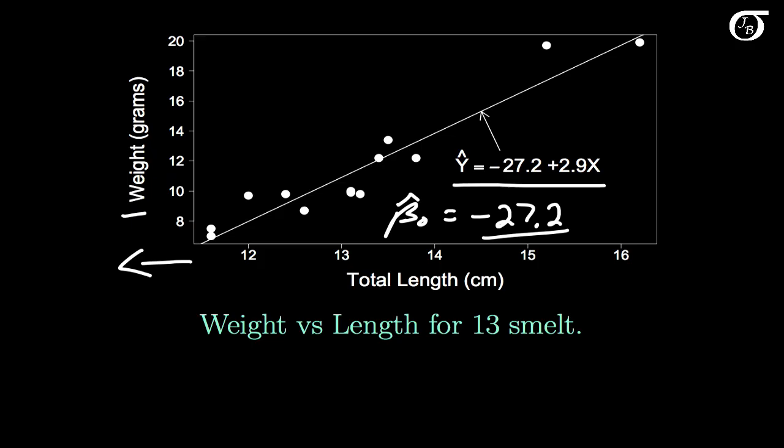So we wouldn't really view it in that interpretation that the mean weight of smelt is this minus 27.2. That doesn't make any sense from a practical viewpoint. But we simply view it as the y-intercept, and we need a point on a line to plot the line.